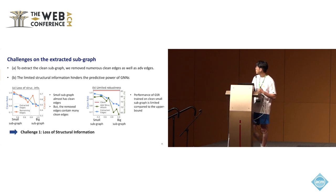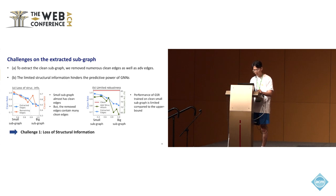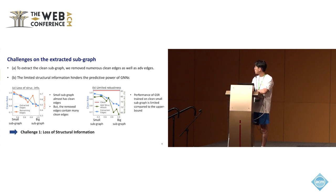Although we extract the clean subgraph, we observe two technical challenges. First, to extract the clean subgraph, we remove numerous clean edges as well as adversarial edges. We can see that the small subgraph has a high clean rate, but the removed edges also contain many clean edges. This means limited structural information can hinder the predictive power of GNNs. The red line is the upper bound of the GNN model and the green line is the performance of the subgraph used by the GSR module.